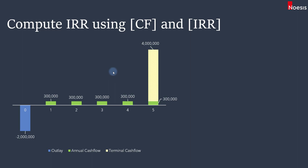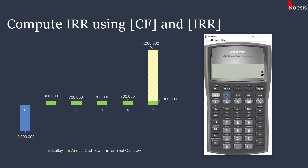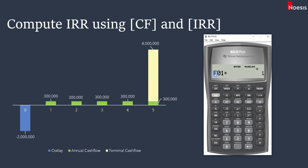Next, compute the IRR using the cash flow worksheet and IRR function with the same series of cash flows. Click CF to open the cash flow worksheet, press Second CEC to clear it. Enter the initial cash flow of negative two million dollars, press Enter, and scroll down to C01. Enter 300,000 for C01. Since cash flows repeat, we can use F01, the frequency field, for the first cash flow.